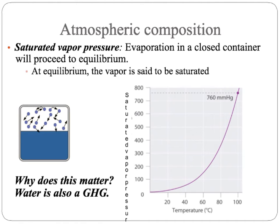So why do we care about this? One reason is that water is also a greenhouse gas. As we warm up the atmosphere by putting more carbon dioxide or methane into it, that warms the atmosphere a little bit, and then the atmosphere is able to hold more water — which is also a greenhouse gas — so it traps even more heat, making it even warmer. This is a really important feedback, an amplification of the greenhouse effect and global warming.